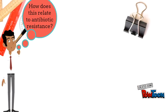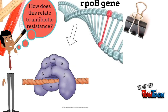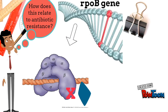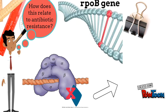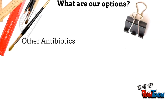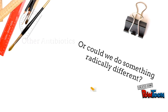If the RPOB gene develops a mutation, it becomes resistant to antibiotics. Rifampin then cannot bind to the beta subunit of RNA polymerase, transcription would take place, and tuberculosis would not be treated.